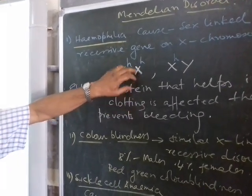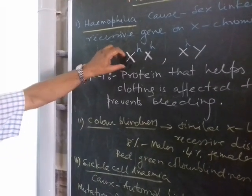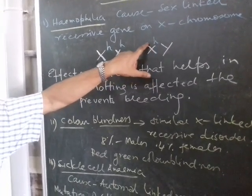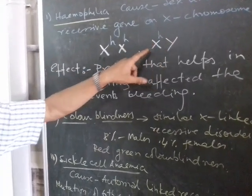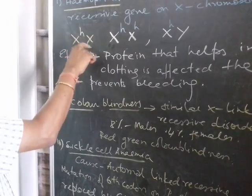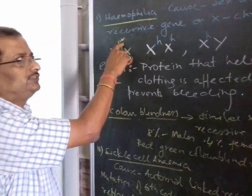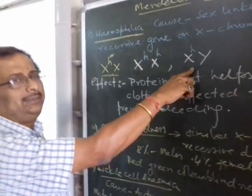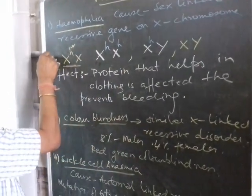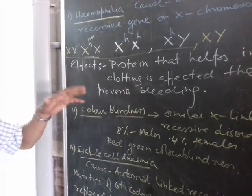If both X chromosomes in a female carry the hemophilia gene, the female is affected. Since males have only one X chromosome, if that X chromosome carries the hemophilia gene, they will be affected. A female with genotype X^H X (one defective, one normal allele) will be a carrier, as the normal X acts as dominant. There can be no carrier males.